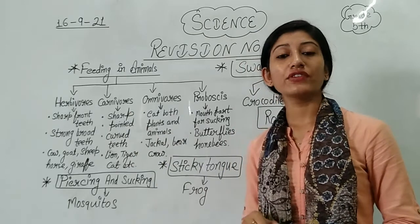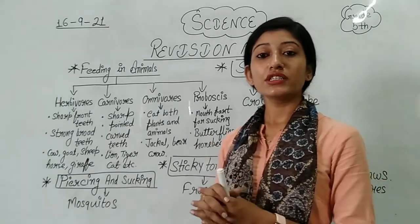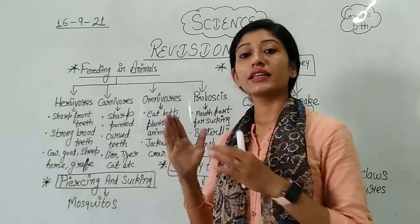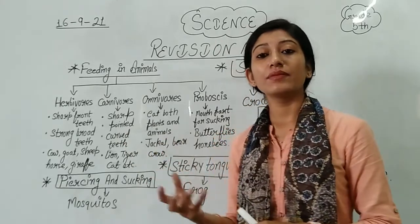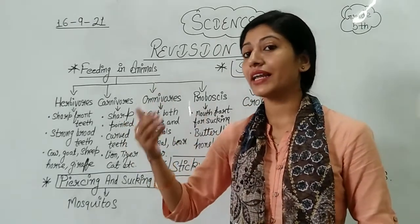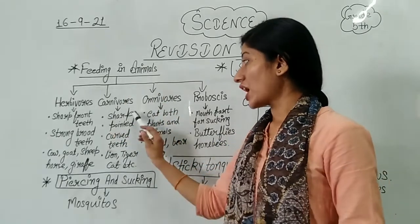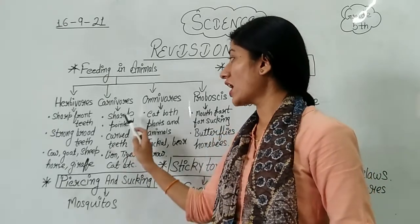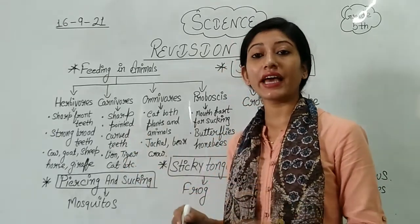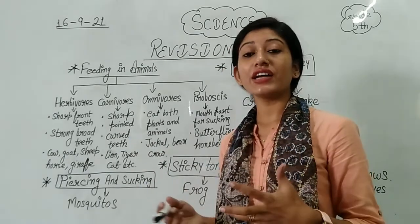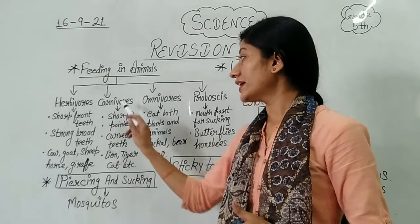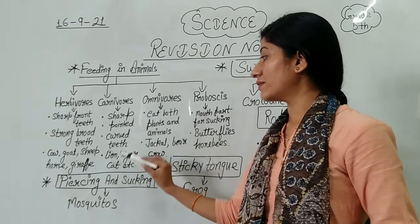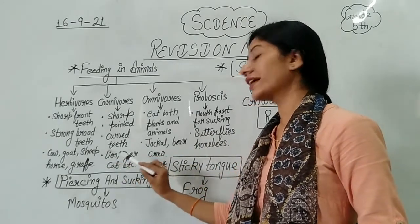Now let's talk about carnivores, another category of animals based on feeding habits. Carnivores are flesh-eating animals — those who eat the flesh of other animals. They have sharp, pointed, and curved teeth so that they can easily tear and chew flesh. Examples of carnivore animals are lion, tiger, and cat.